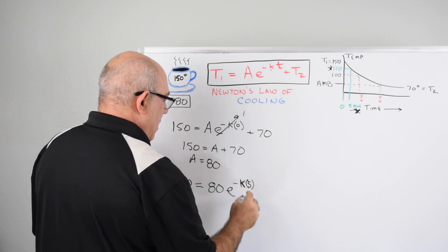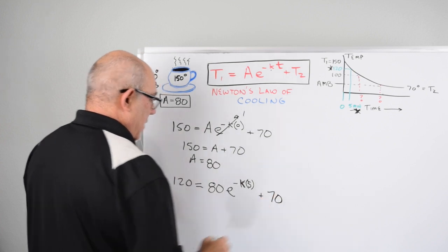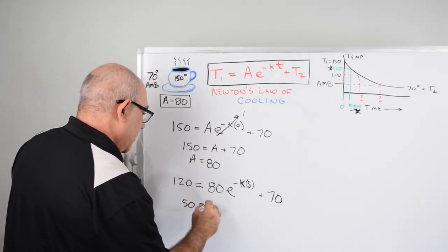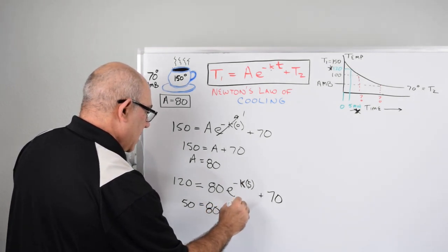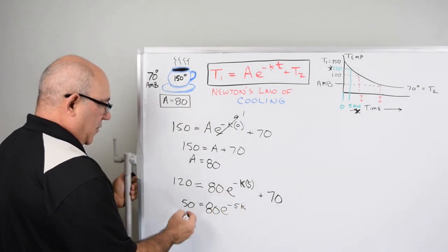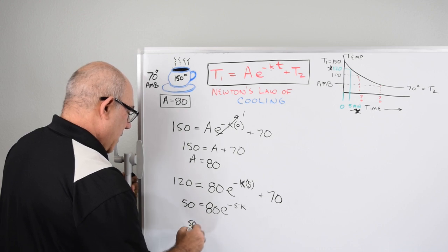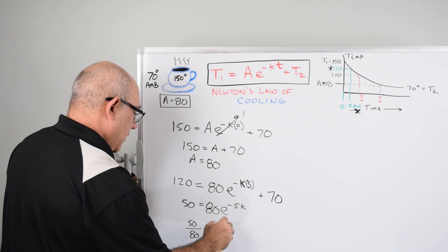So we have 50 equals 80 e to the minus 5K. We're going to divide that through so we get 50 divided by 80 equals e to the minus 5K.